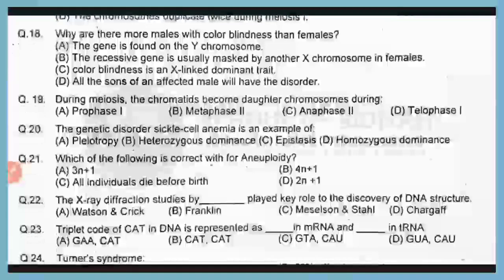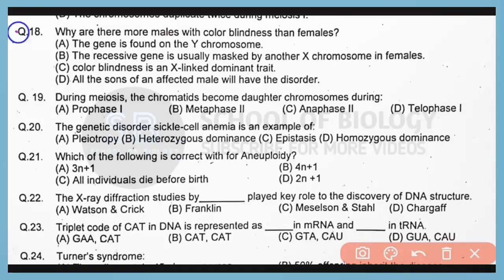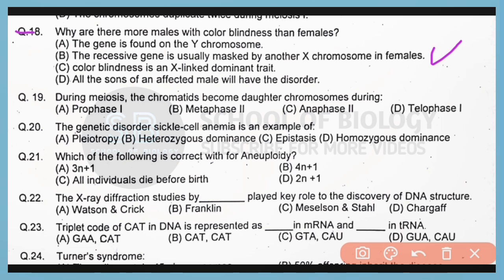Question 18. Why are there more males with color blindness than females? Because in females, the recessive gene is usually masked by the other X chromosome. In males, there is only a single X chromosome, which is why color blindness is more common in males.